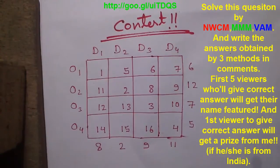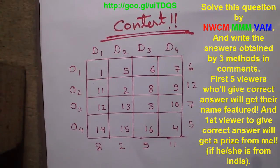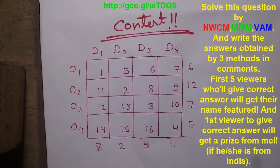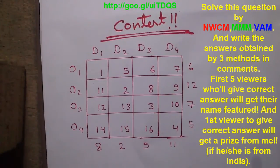To learn how to solve a transportation problem by Matrix Minimum Method, Northwest Corner Method, Vogel's Approximation Method, or Modi Method, you can watch my previous operations research videos. The link is given in the video description below. I have many other videos on operations research — get all those videos in the playlist below. Thanks for watching, see you in my next video, and till then stay connected.